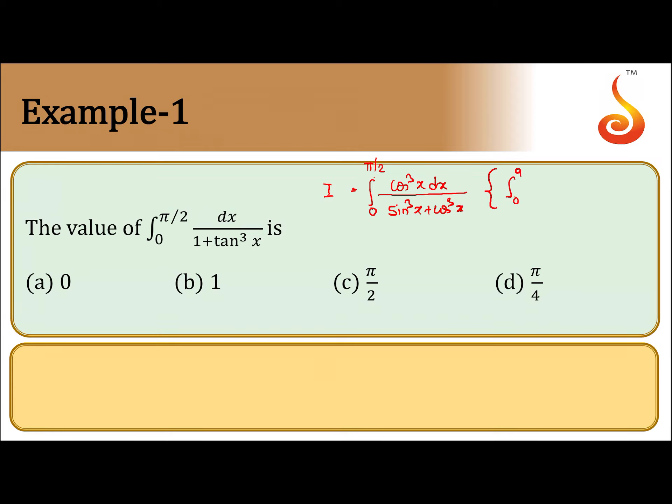We use the concept: integral from 0 to a of f(x) dx is equal to integral from 0 to a of f(a minus x) dx. Using that concept, I becomes 0 to pi by 2.